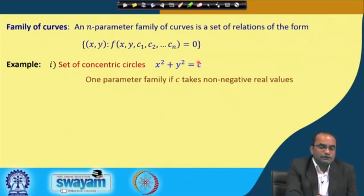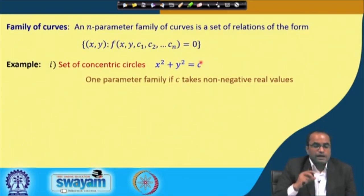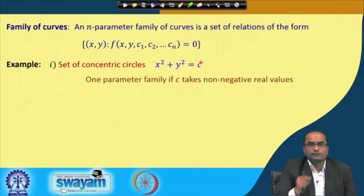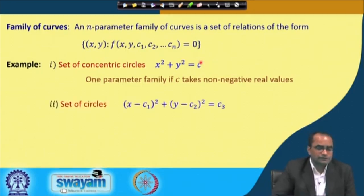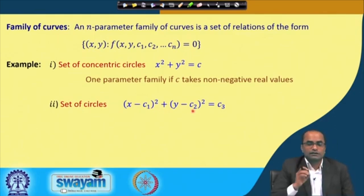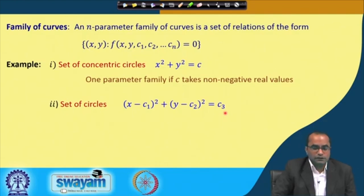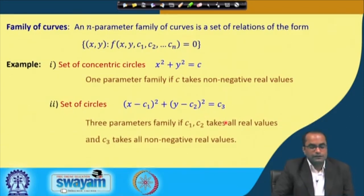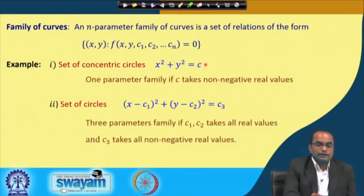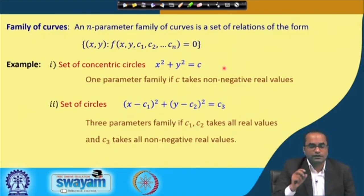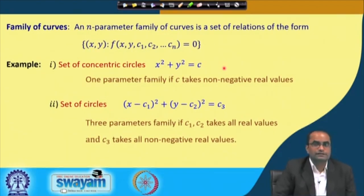For different values of c we get circles of the same center with different radii — so this is a one-parameter family. Now if we also vary the center, such as the set of all circles (x - c₁)² + (y - c₂)² = c₃², where c₁, c₂ are any real numbers and c₃ is a positive real number, this gives a three-parameter family of circles with different centers and different radii.